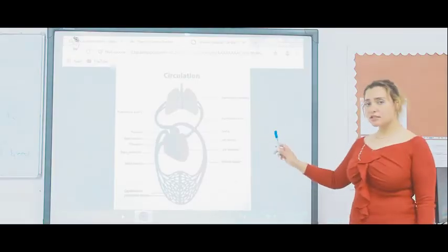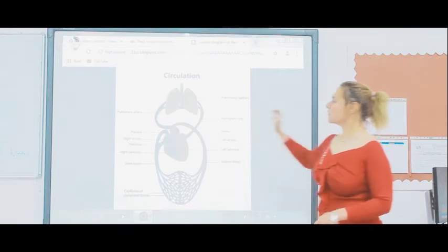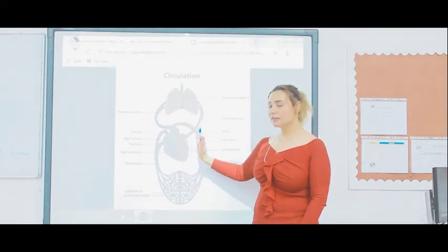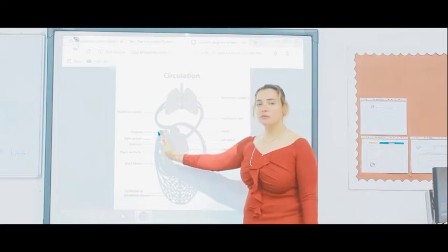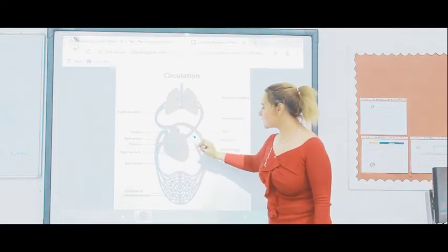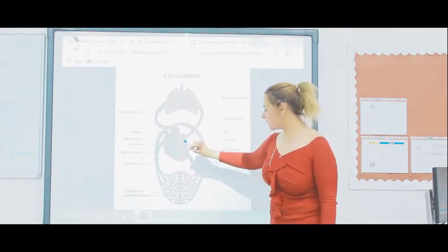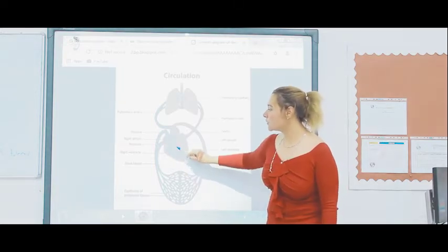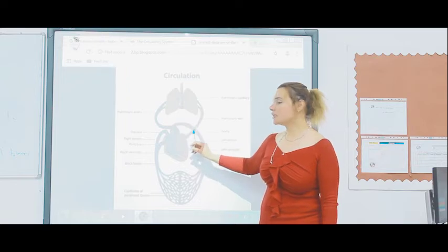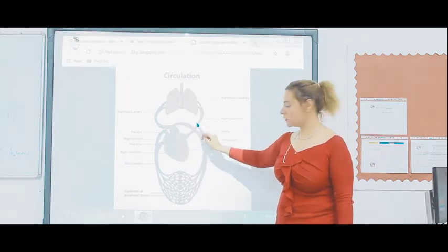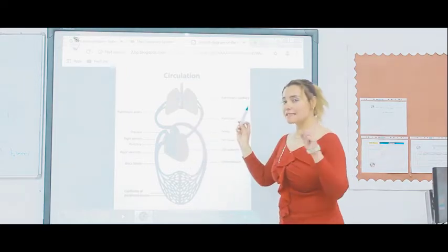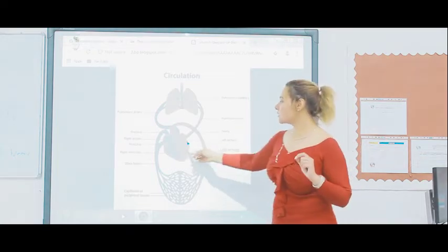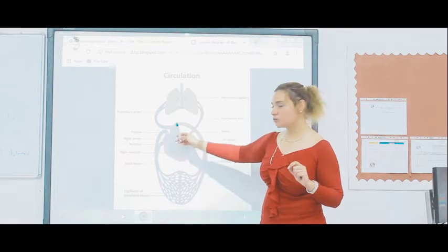Let's discuss the blood circulation one final time. The blood enters the left atrium, then from the left atrium to the left ventricle. It is pumped throughout the main artery — the aorta — to all parts of the body, except the lungs. So again: from the left atrium to the left ventricle, and then to the aorta, to the whole body.